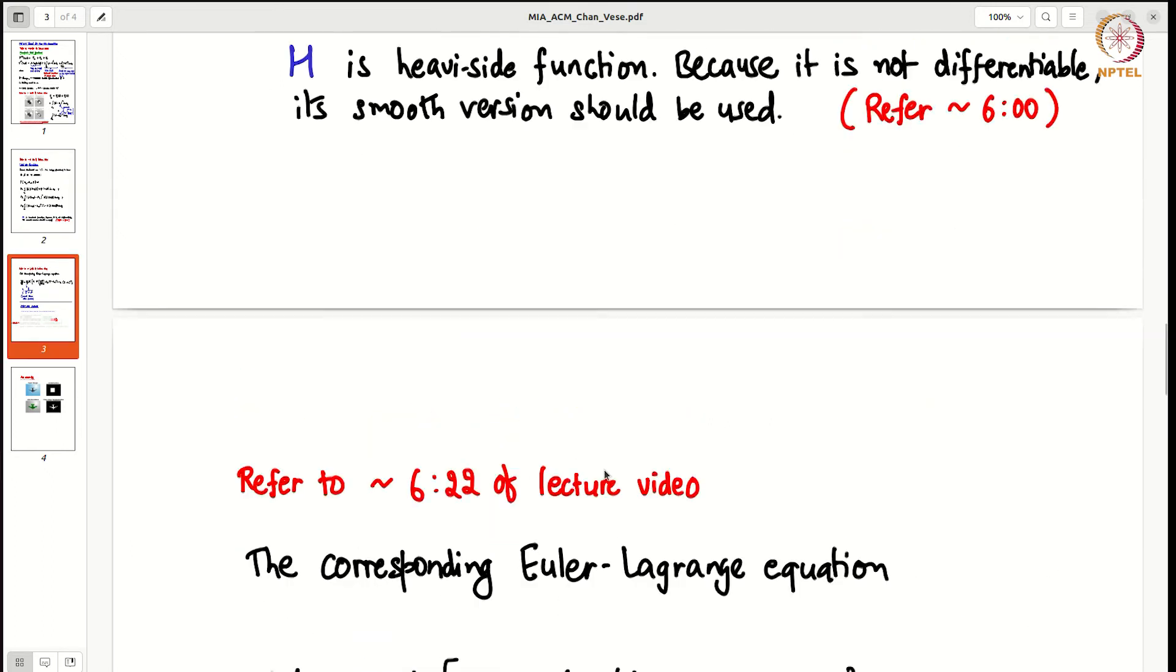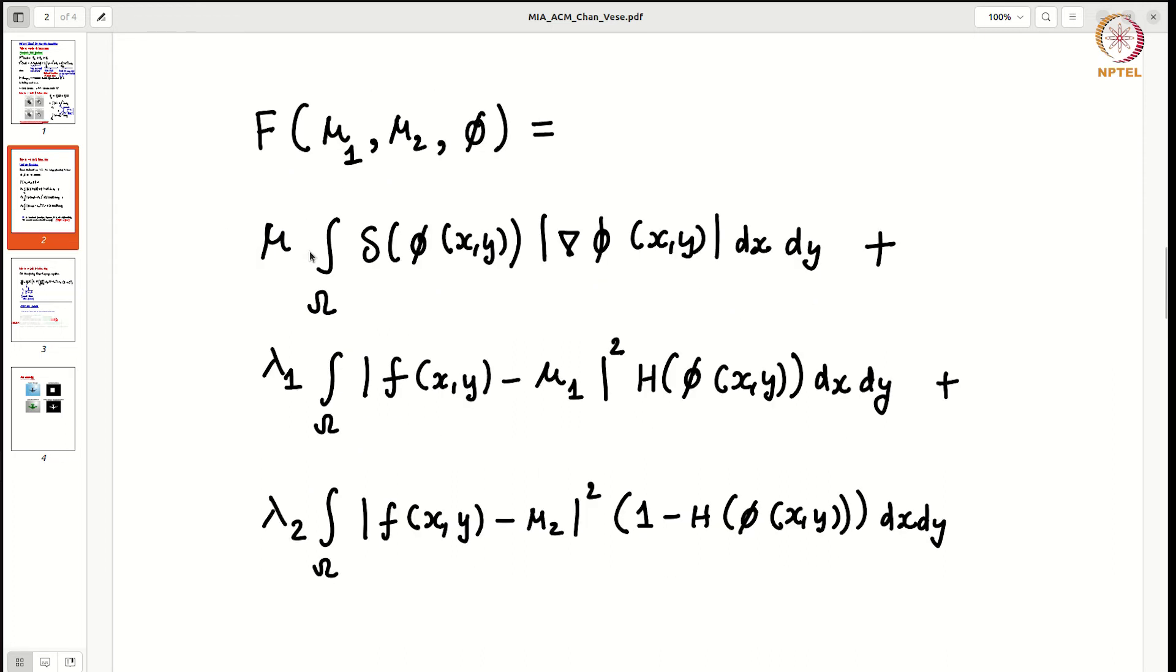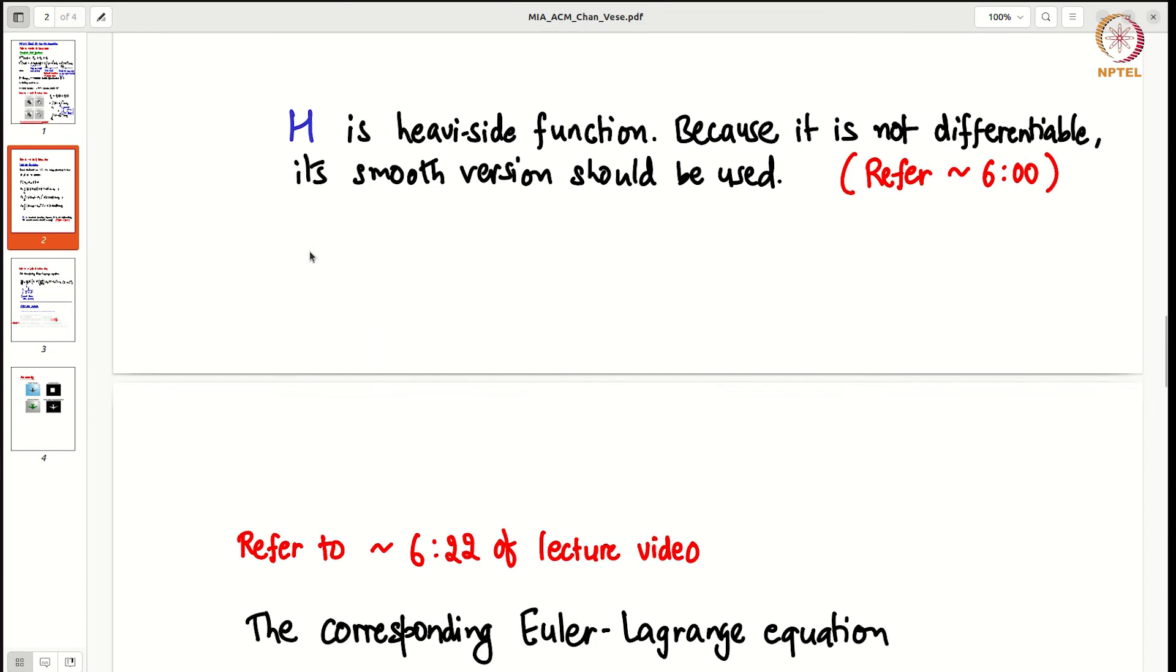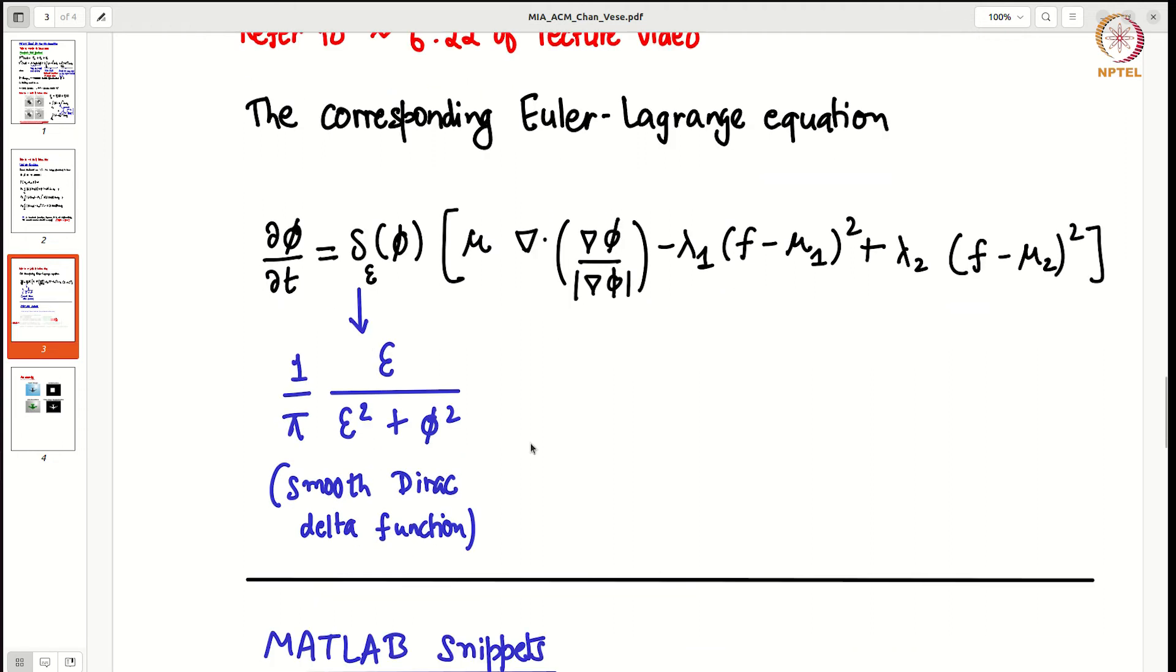Now we have a functional in terms of phi, not in terms of C, please note that. When we use our Euler-Lagrange equation, we find this PDE: del phi by del t is equal to this. Here delta is the smooth Dirac delta function. So this is the PDE that we solve.